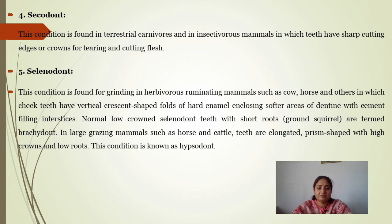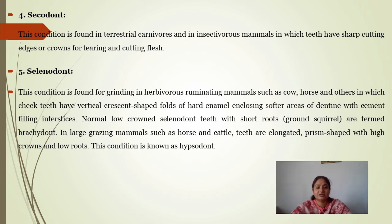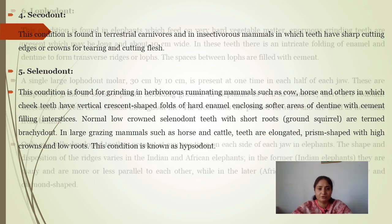In large grazing mammals such as horse and cattle, teeth are big, prism-shaped, and high-crowned. This condition is also known as hypsodont.